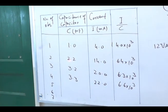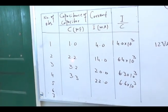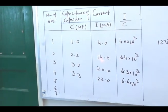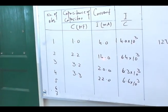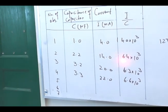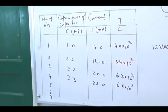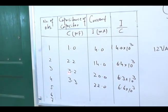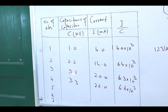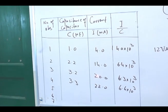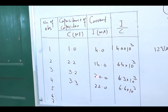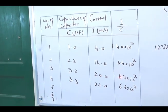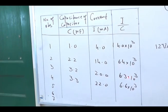For the second reading, the capacitance is 2.2 microfarad, the current is 14 milli-ampere, and the ratio is 6.4 × 10³. For the third reading, the capacitance is 3.2 microfarad, the corresponding current is 20 milli-ampere, and the ratio is 6.3 × 10³.